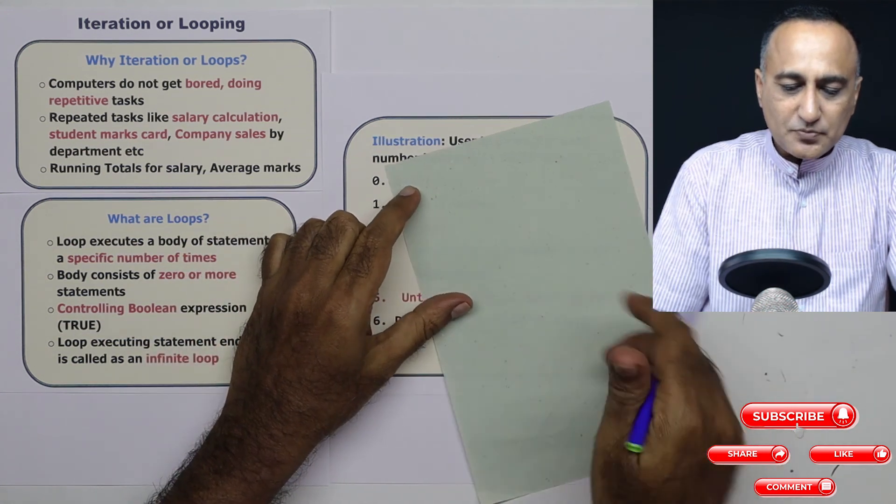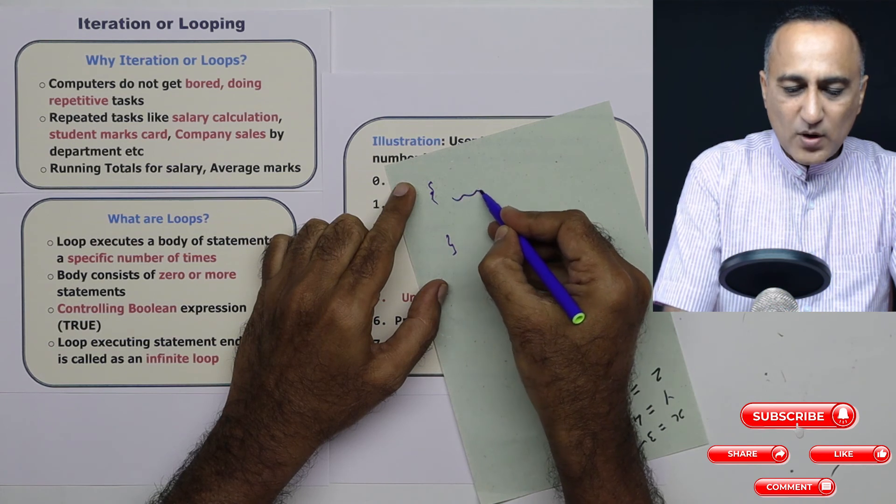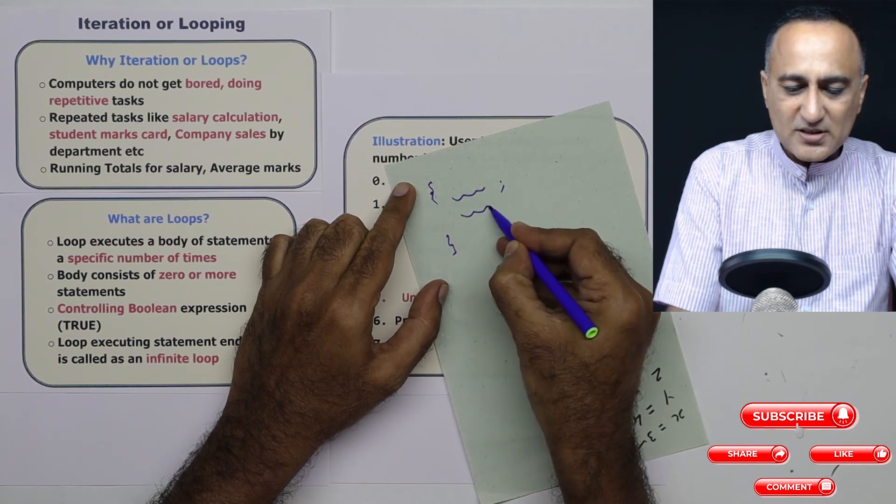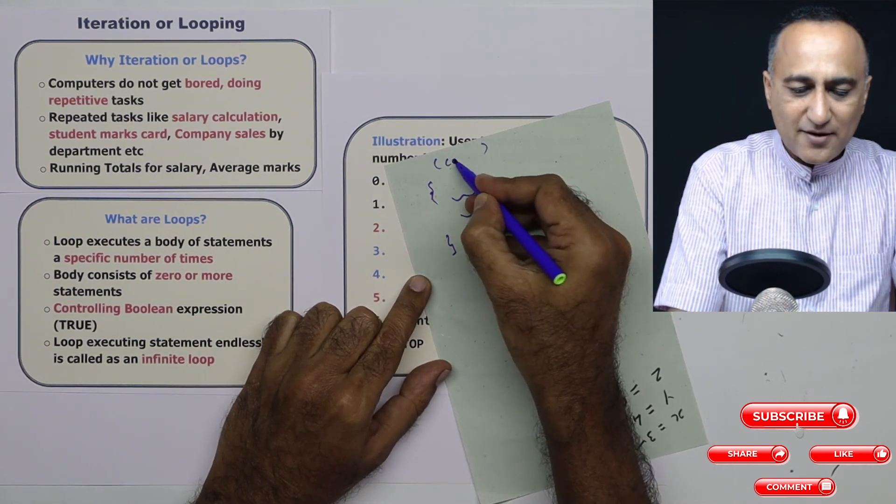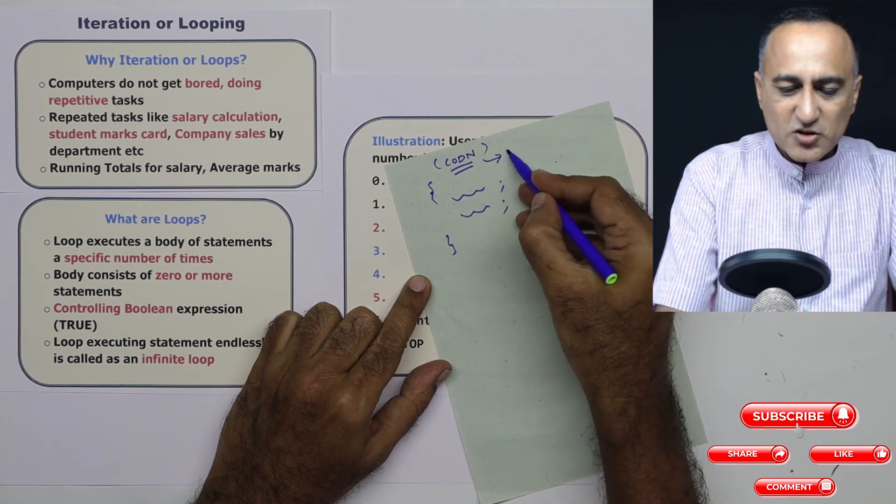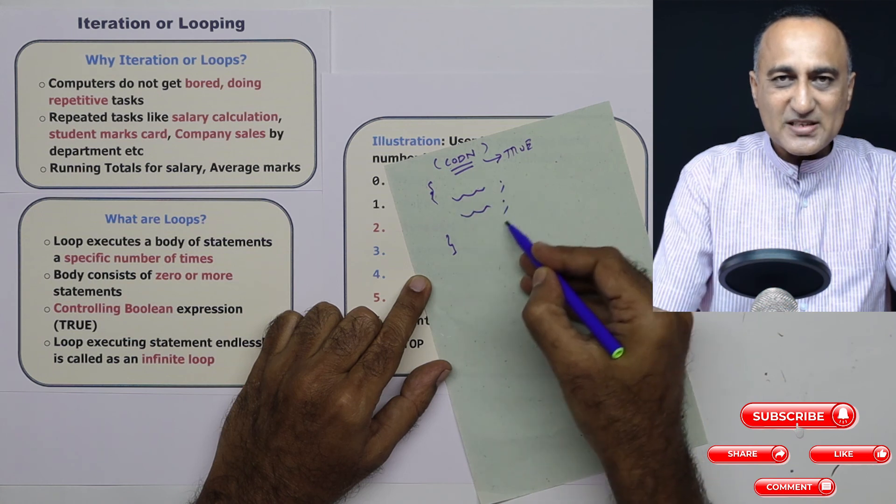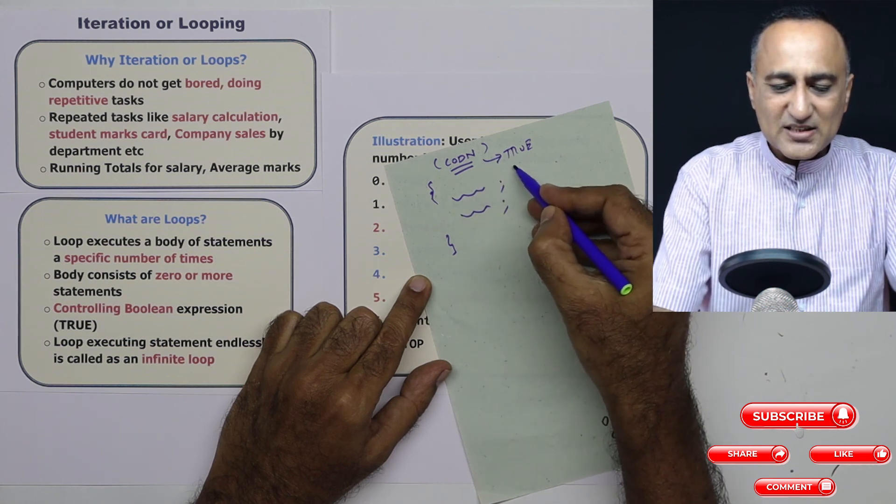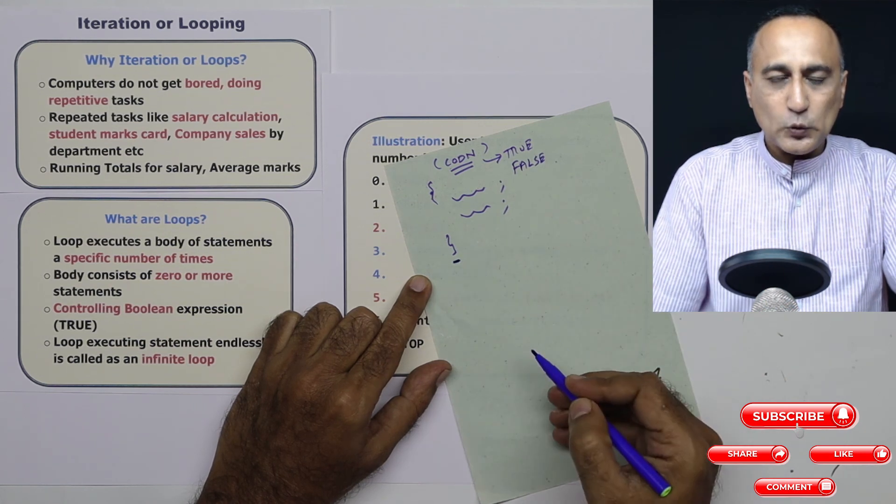Suppose I have a block with one instruction followed by a semicolon, second instruction followed by a semicolon. Here generally I have a condition. As long as this condition is true, I will keep executing these statements again and again. The minute this condition becomes false, I am going to come out here of the loop.